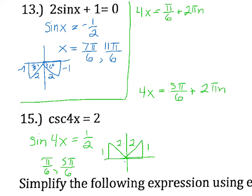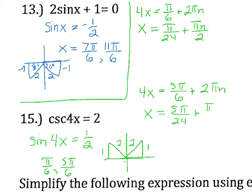Dividing by 4, I have x equals pi over 24 plus pi n over 2, and x equals 5 pi over 24 plus pi n over 2. I need to list all solutions between 0 and 2 pi. I'm going to get common denominators — multiplying by 12 over 12 — to make it easier to add.